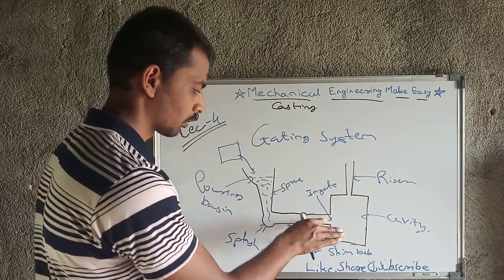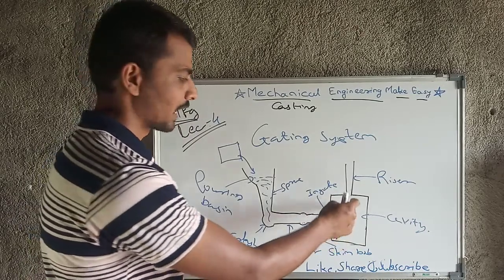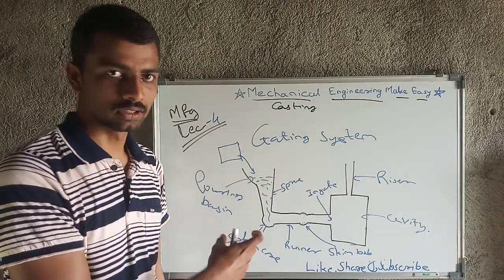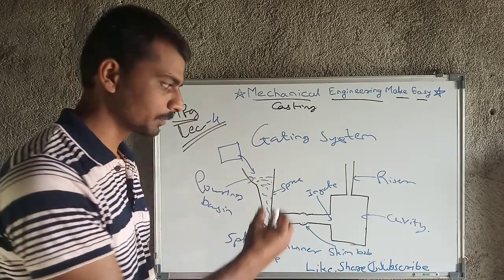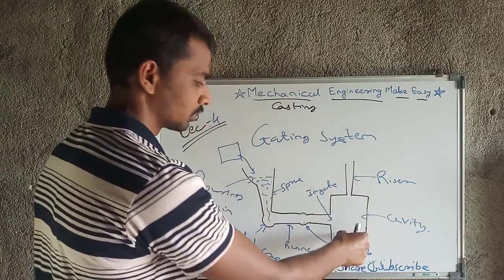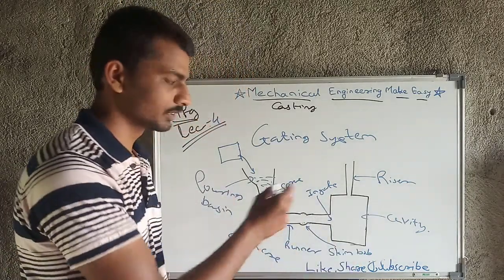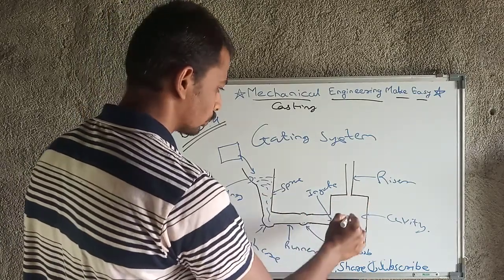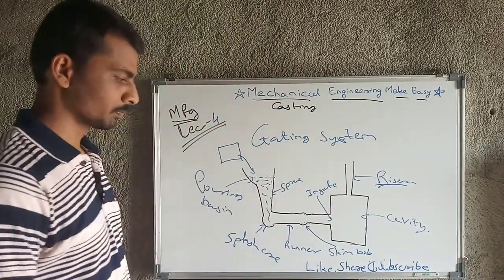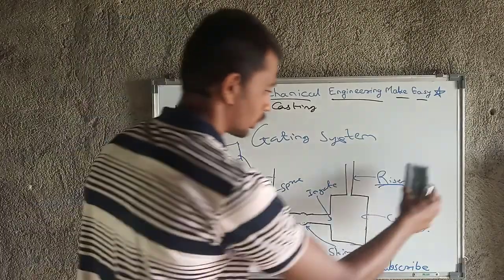The ingate function is to provide molten metal from the runner to the cavity. The cavity is what we fill with molten metal. The riser compensates for shrinkage allowances — if the metal shrinks while solidifying, the riser has extra material that flows back into the cavity to fill it. Another function is to confirm that the cavity is properly filled.